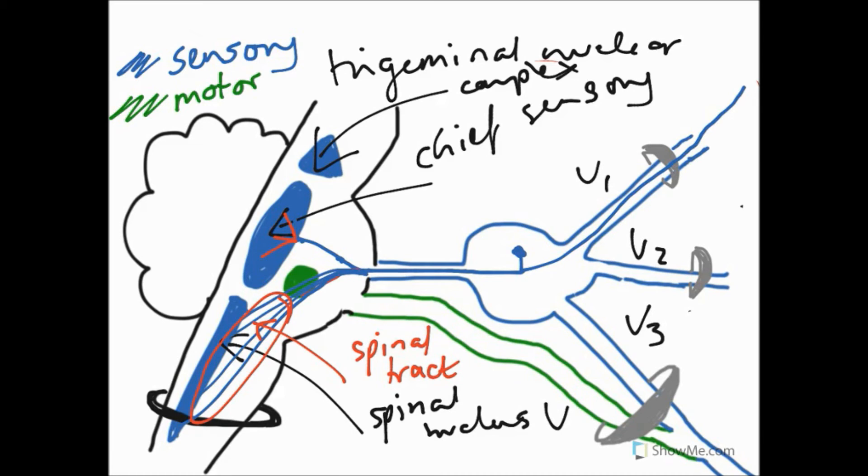So after synapsing on the nuclei, travel up in the TTT, where they're going to synapse in the VPM of the thalamus. And then the third order neurons are then going to travel up to the cortex. And Scott has talked about that in the course before when he's talked about sensory information from the face. So that's just a little bit of a reminder.